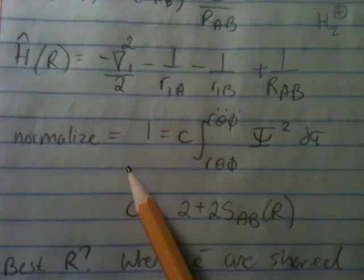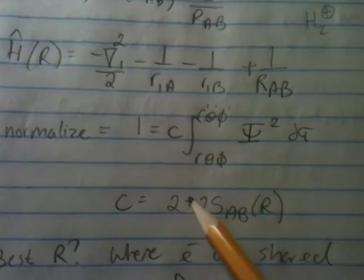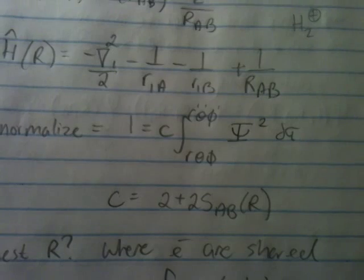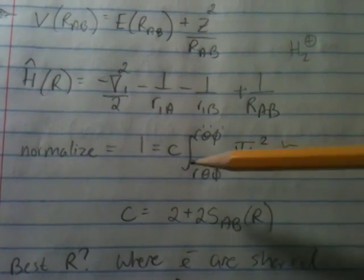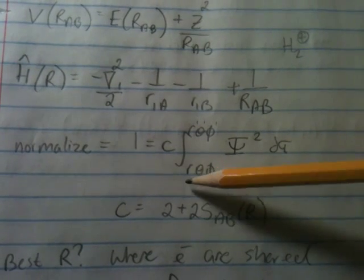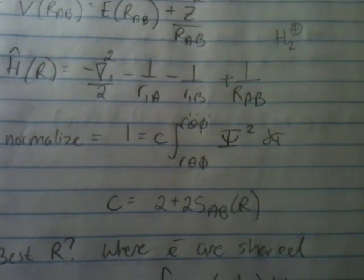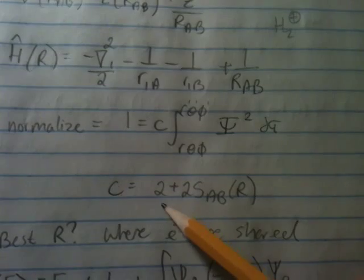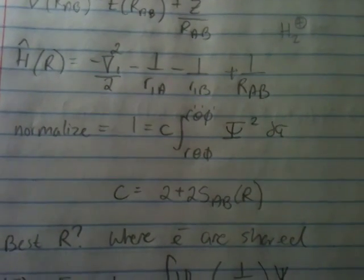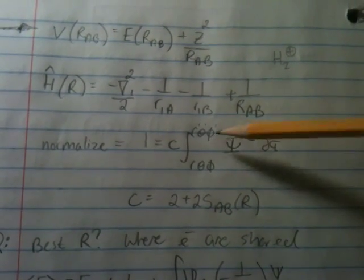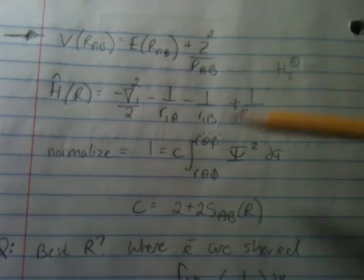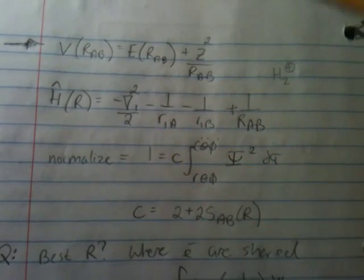So, you normalize this using your wave function squared over the integral of these three parameters, so d tau. And you get C, you get some sort of normalization function. This is just a mathematical example, this is nothing conceptual, this is just showing you, this is how you can solve for one of these.